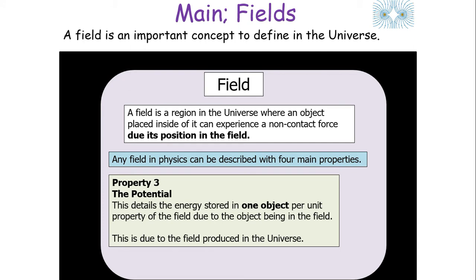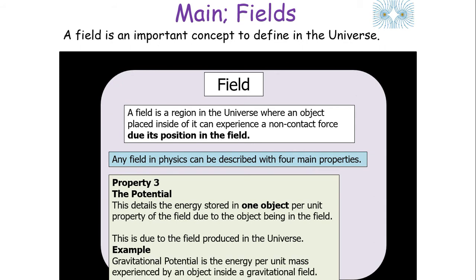A field is a very important concept defined in the universe. A field is a region in the universe where an object placed inside of it can experience a non-contact force due to its position in the field. One property we can use to describe a field is the potential, which details the energy stored in one object per unit property of the field. For example, the gravitational potential is the energy per unit mass experienced by an object inside a gravitational field.